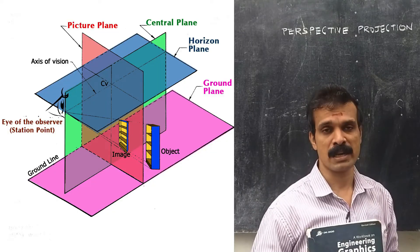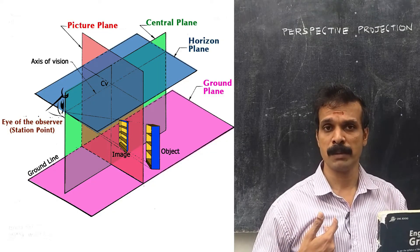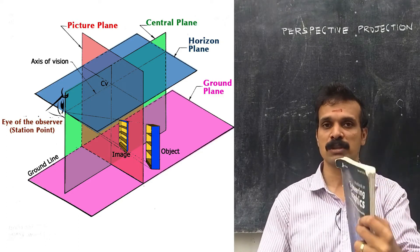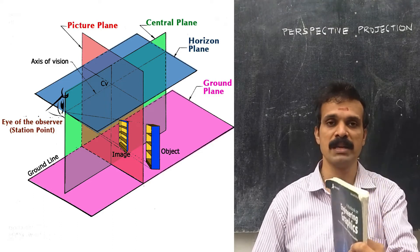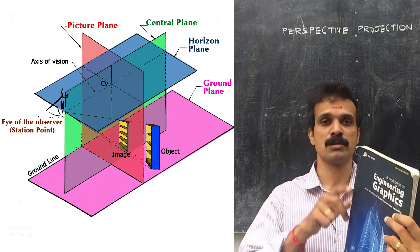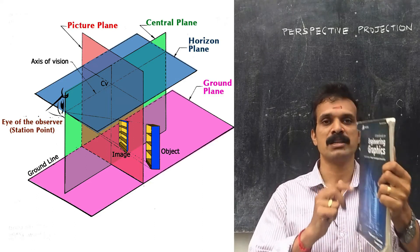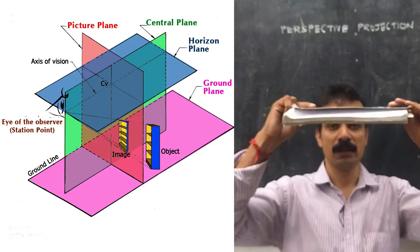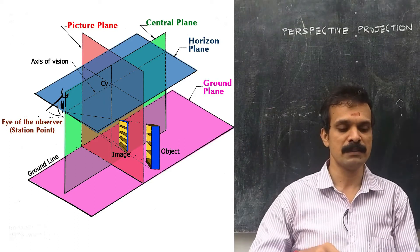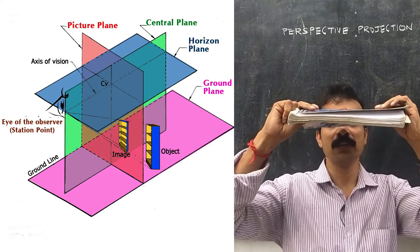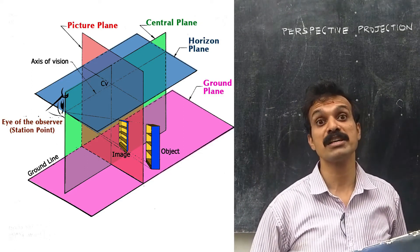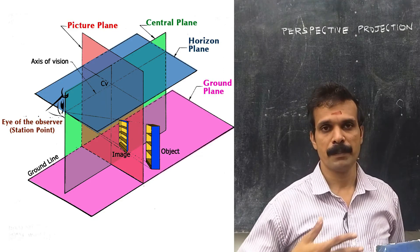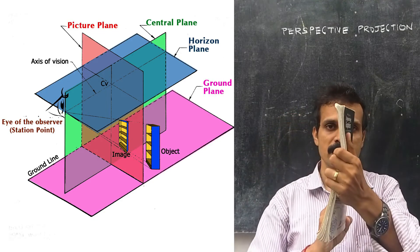So in perspective projection there is a picture plane (PP), a ground plane (GP), and a central plane which is perpendicular to both the ground plane and the picture plane and passes through the station point — the station point being the eye of the observer. There is also a horizon plane, which is parallel to the ground plane and passes through the eye of the observer.